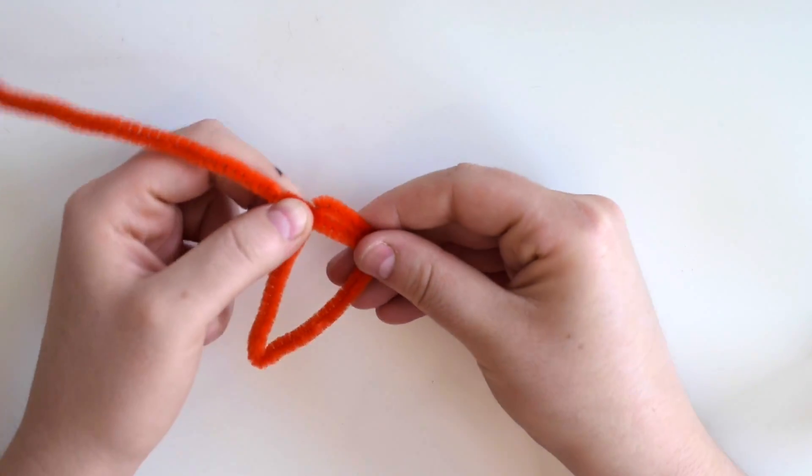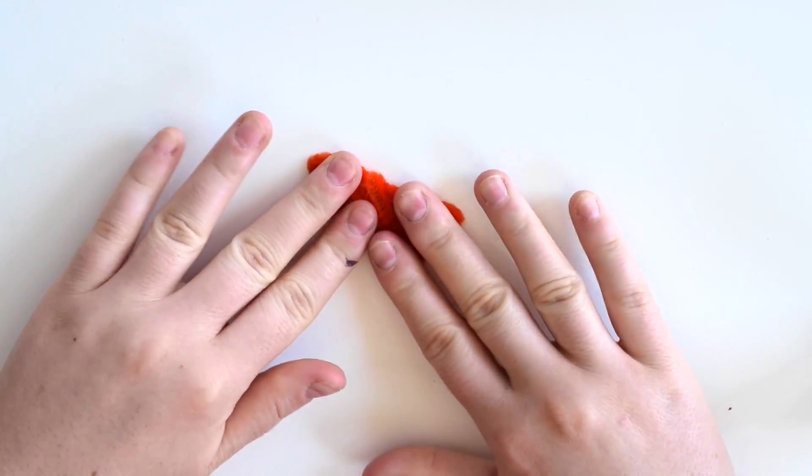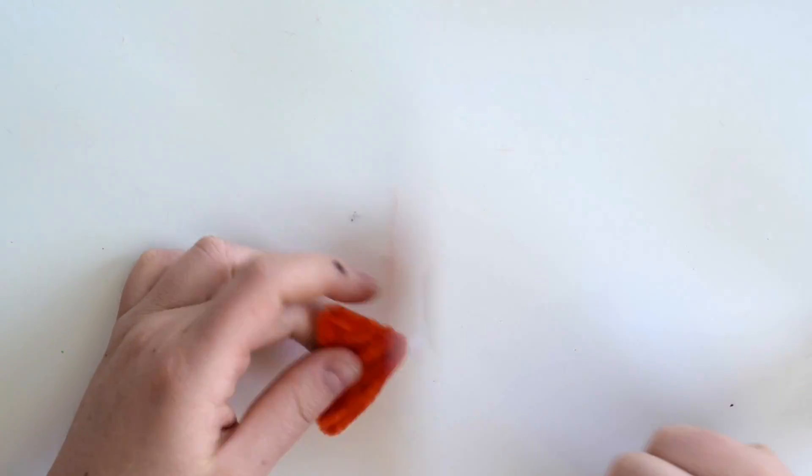Next, for the ice cream cone, start with whatever color cone you'd like and then shape it into a triangle, again keeping any cats at bay. Just as before, fill it in.